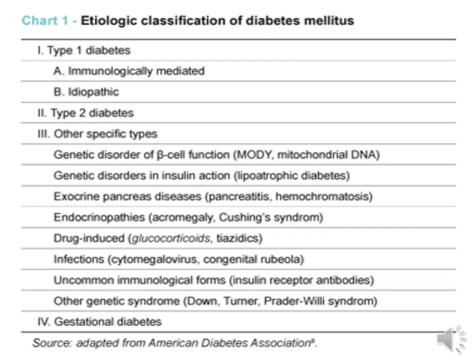Apart from type 1 and type 2 diabetes, there is type 3 and type 4 diabetes. Type 3 is due to genetic mutations, pancreatic diseases, endocrinopathies, glucocorticoid induction, infections, and some genetic syndromes. Type 4 diabetes is due to pregnancy — we call it gestational diabetes mellitus.